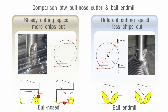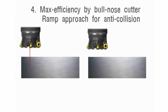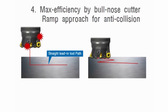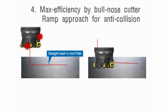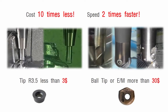Compared to a ball end mill, the bull-nose tool has more advantage for machining because the speed is constant and it is better for chip elimination. However, a bull-nose tool could be dangerous without experience. AI CAM is different — through simulation, AI CAM detects the collision area and changes to a zig-zag ramp toolpath to avoid collision. Bull-nose tool is 10 times cheaper than ball end mill, and the machining speed is almost twice as fast.